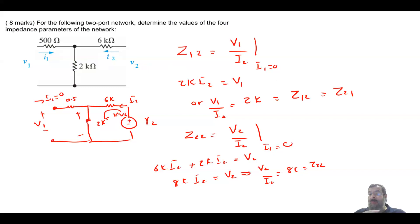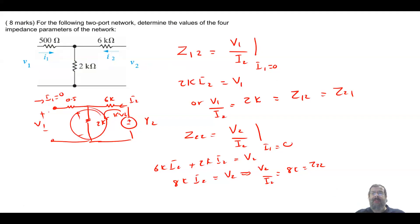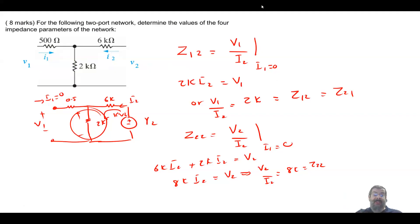So these are the four impedance parameters of the two-port network. Notice that z11 and z22 are not equal, unlike z12 and z21 which are equal and represent that shared internal impedance. This is a very straightforward question. You may not see it often, but it is no harm to know this material.